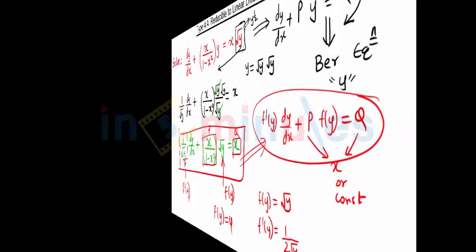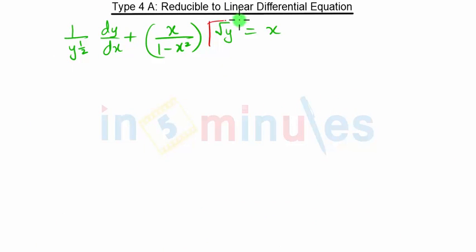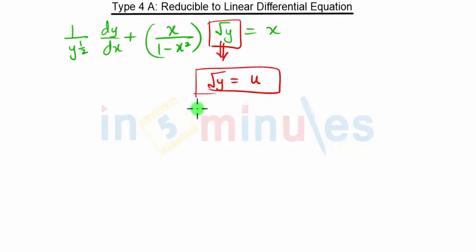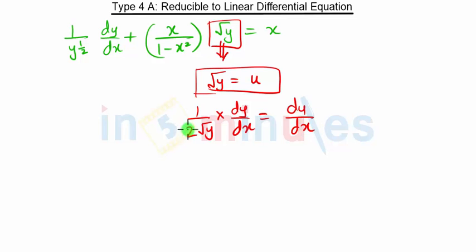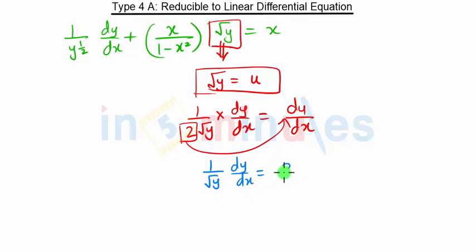We substitute √y = u. Taking the derivative: d(√y)/dx = 1/(2√y)·(dy/dx) = du/dx. Multiplying both sides by 2: (1/√y)·(dy/dx) = 2·(du/dx). So this part of our equation is replaced by 2·du/dx.